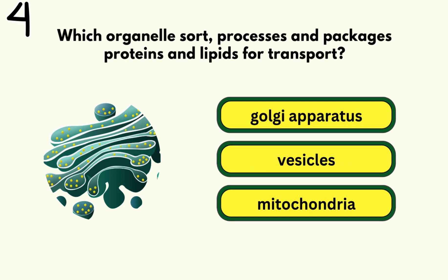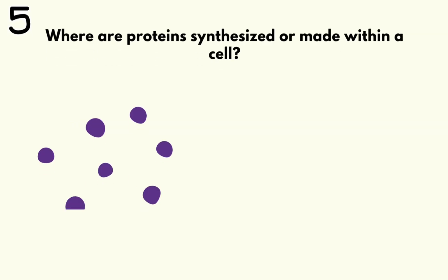Number 4. Which organelle sorts, processes, and packages proteins and lipids for transport? Golgi apparatus.